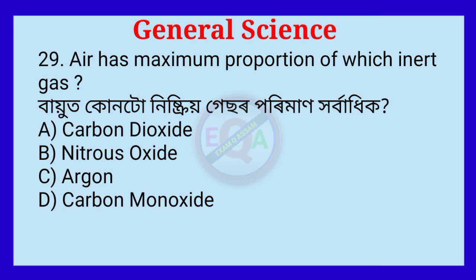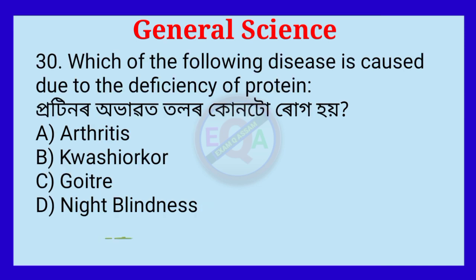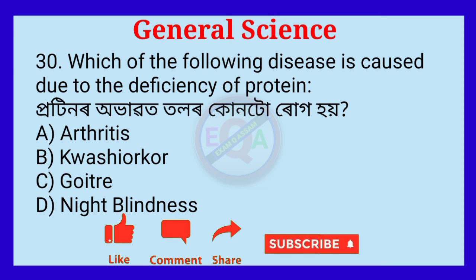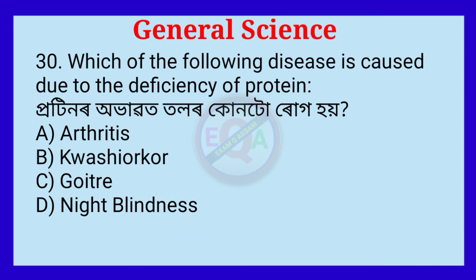Question number 29. Which is the first noble gas by proportion? Correct answer: argon. Question number 30. Which of the following diseases is caused due to the deficiency of protein? Correct answer: option B, kwashiorkor.